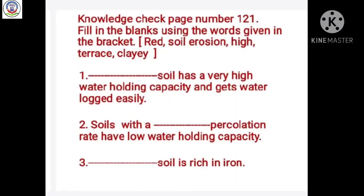Knowledge Check, page number 121. Fill in the blanks using the words given in the bracket: red, soil erosion, high, terrace, clay. Number 1: Dash soil has a very high water holding capacity and gets waterlogged easily.